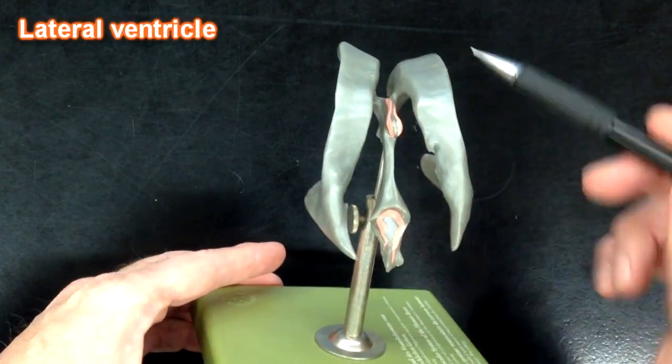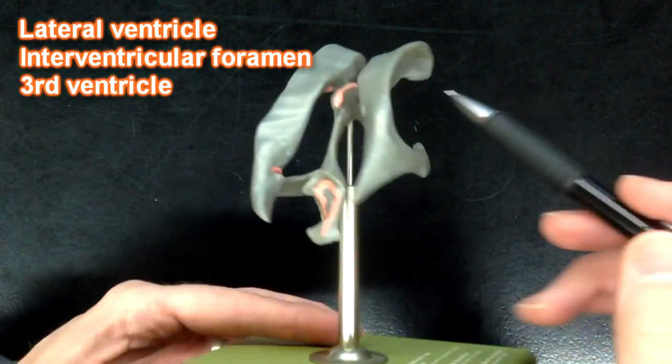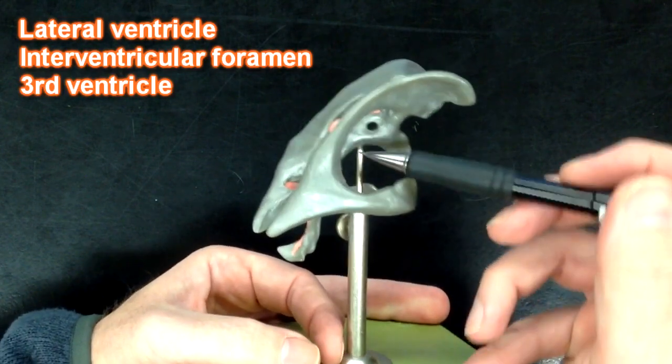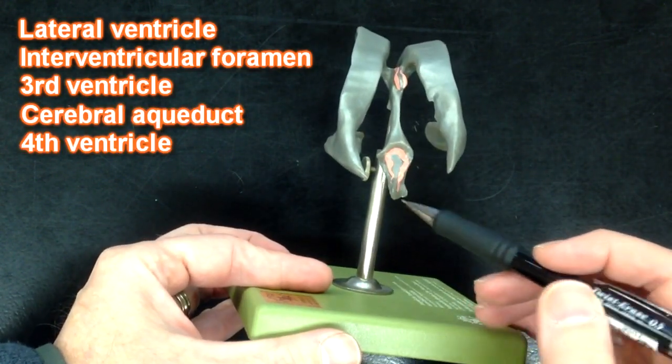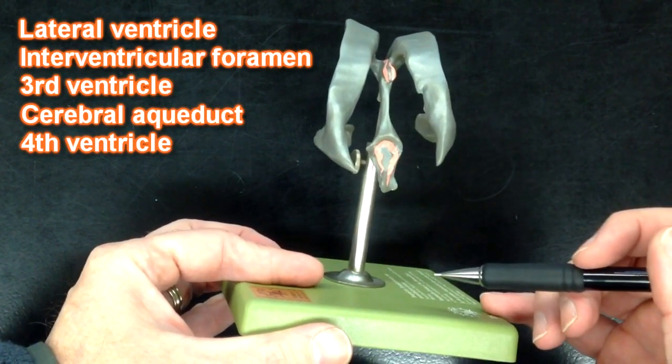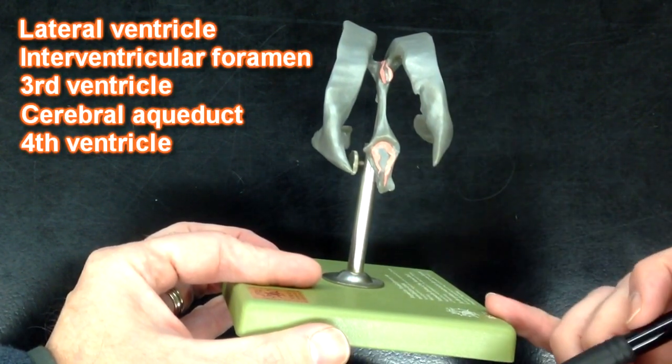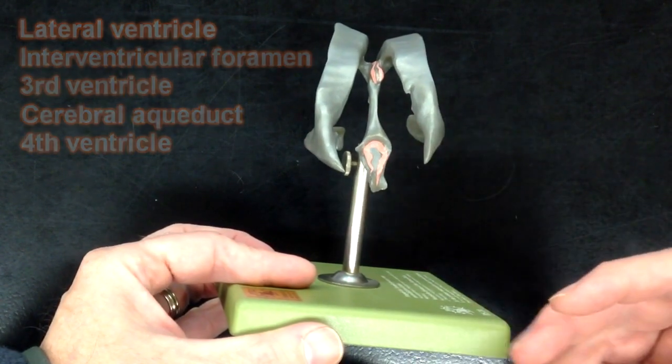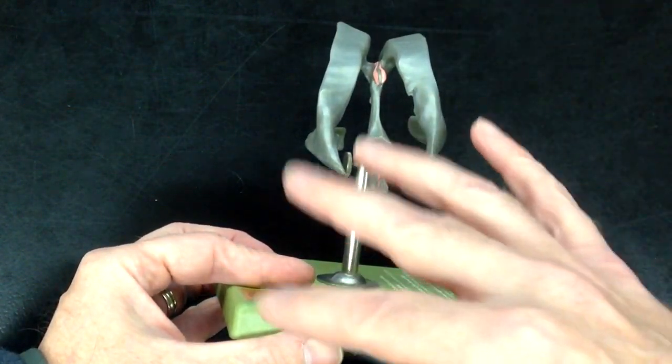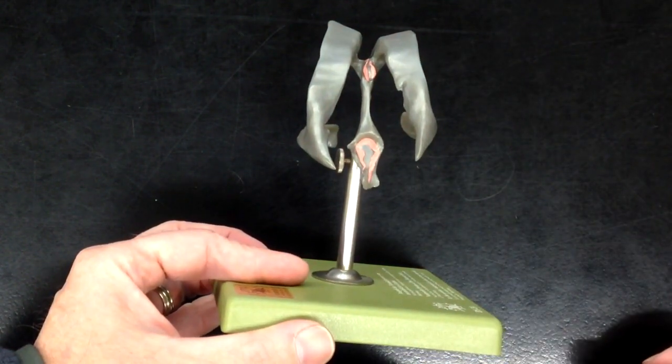When the cerebrospinal fluid is created, it flows from the lateral ventricles through the interventricular foramen to the third ventricle through the cerebral aqueduct to the fourth ventricle, and then down outside of the spinal cord and some inside the central canal of the spinal cord. And then the outside cerebrospinal fluid would encompass the entire central nervous system.